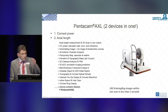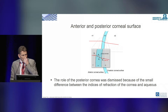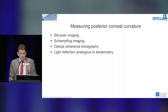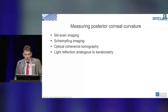The most important thing we have seen over the last year is anterior and posterior corneal surface measurements, and the role of the posterior cornea has been evaluated. There are several measurement approaches possible: slit scan imaging, Scheimpflug, optical coherence, light reflective, and analogous to keratometry.